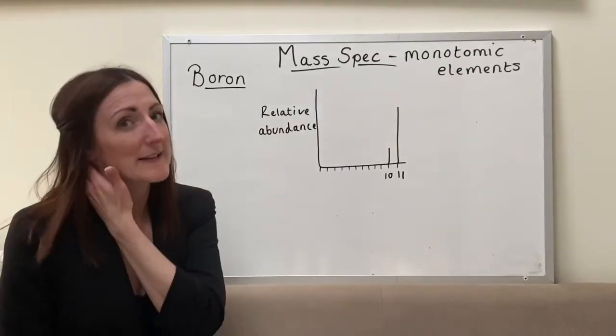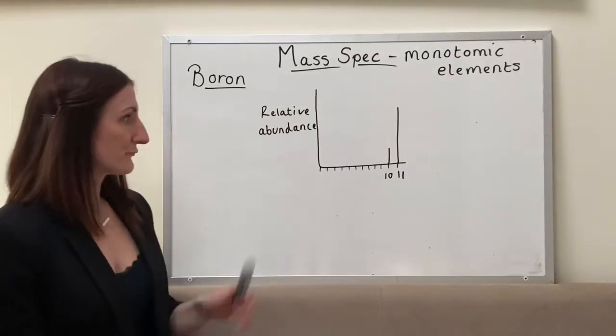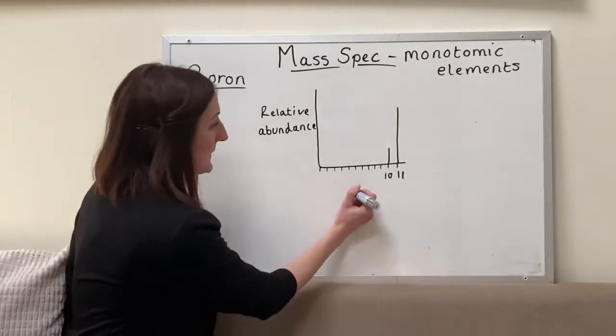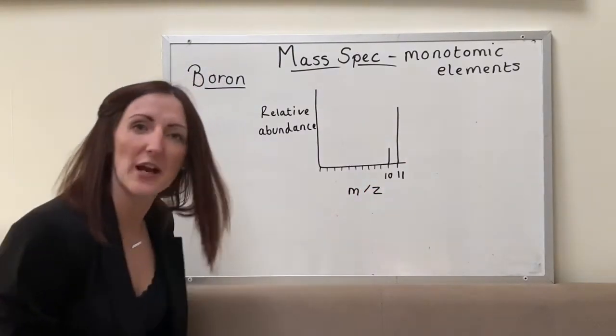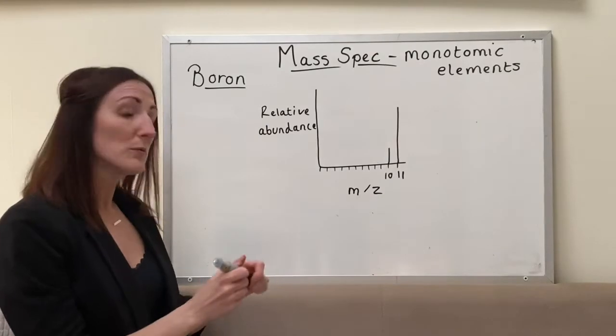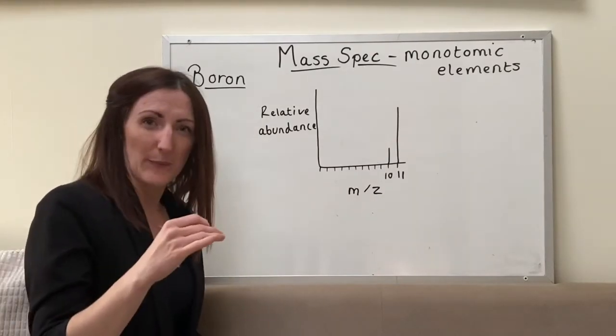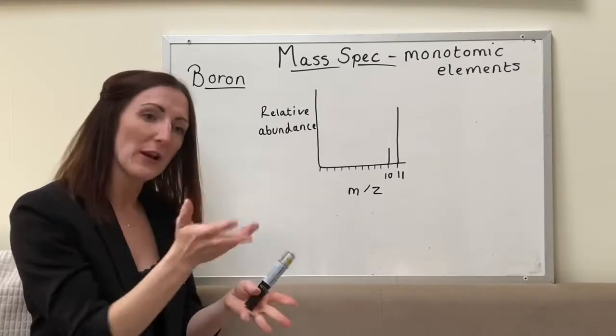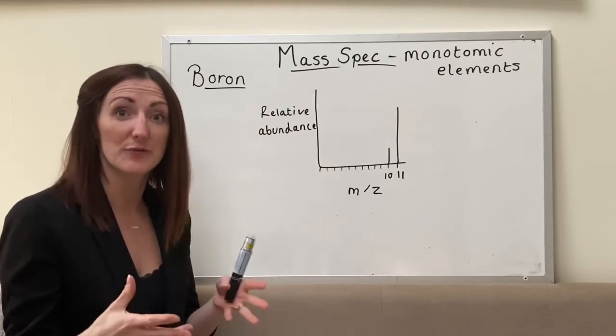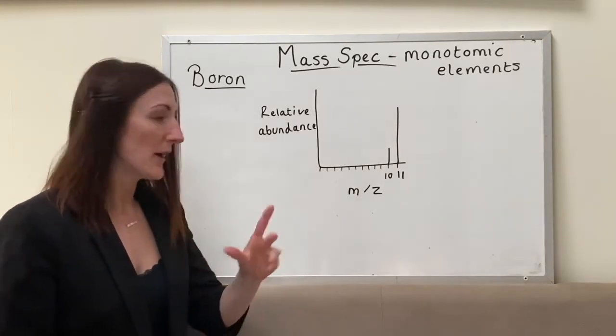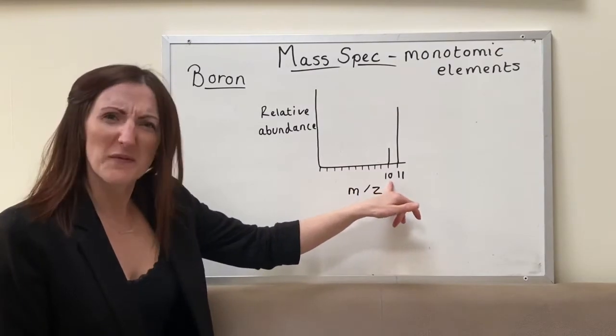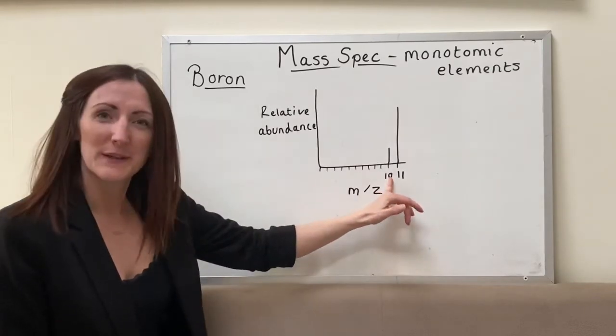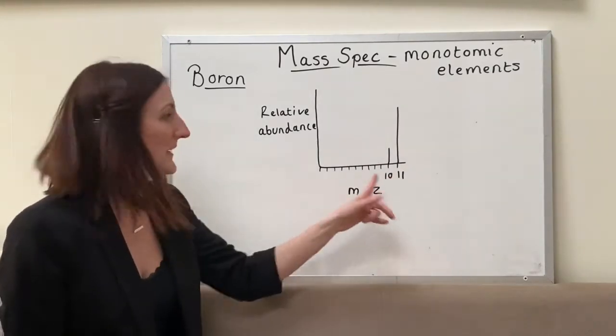So our spectra that's created by our mass spec looks like this. We have our relative abundance on the y-axis and this at the bottom is our mass to charge ratio. You often see it like that and so all this means is that when we ionize our sample it's going to get given a charge and most of it is going to get given a charge of one plus. Here it's picked up that some of it weighs 10. So this here we're imagining that it has a mass of 10 and a charge of one so 10 over 1 gives us the 10.